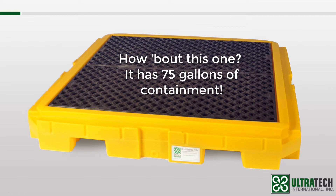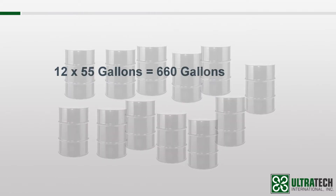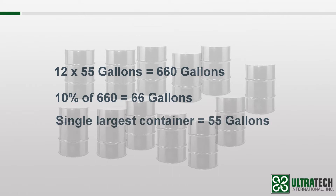For the second scenario, let's try a larger quantity of drums — let's go with 12. 12 drums at 55 gallons each would total 660 gallons. 10% of 660 gallons equals 66 gallons. The single largest container is 55 gallons, so in this instance the requirement to meet the regulations would be 66 gallons, since that is the larger number of the two.